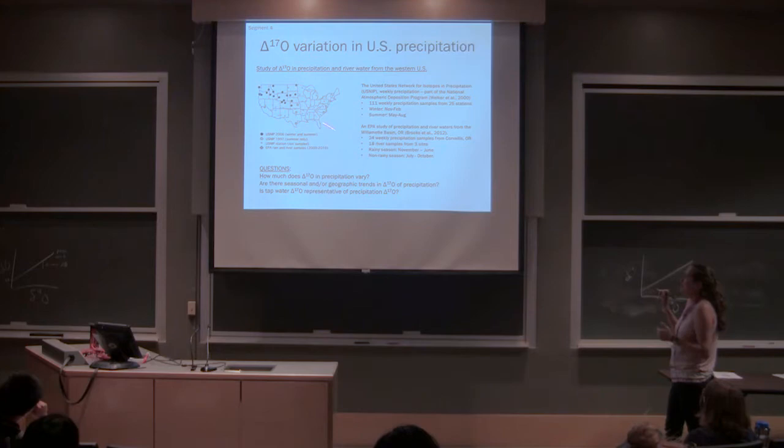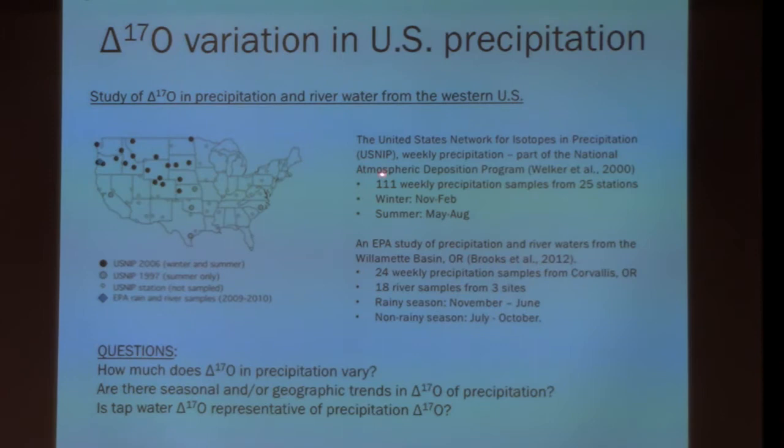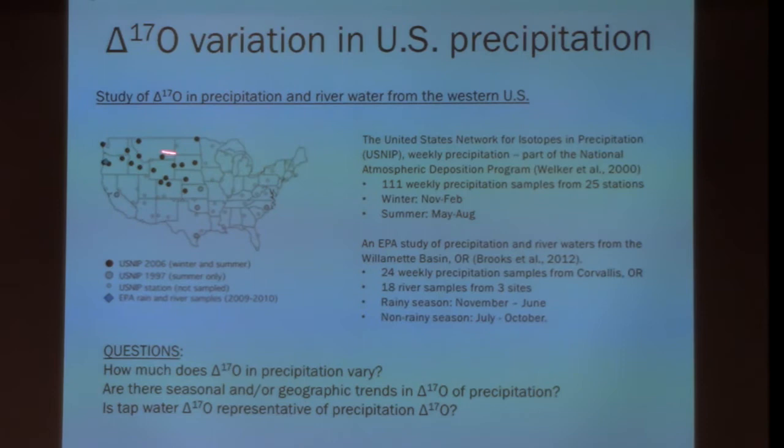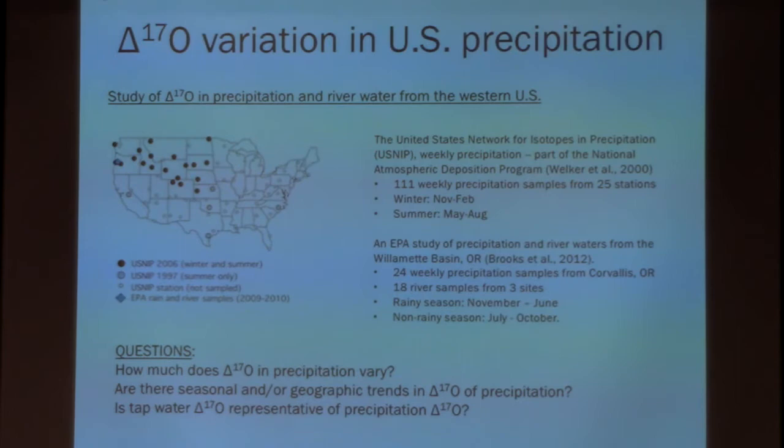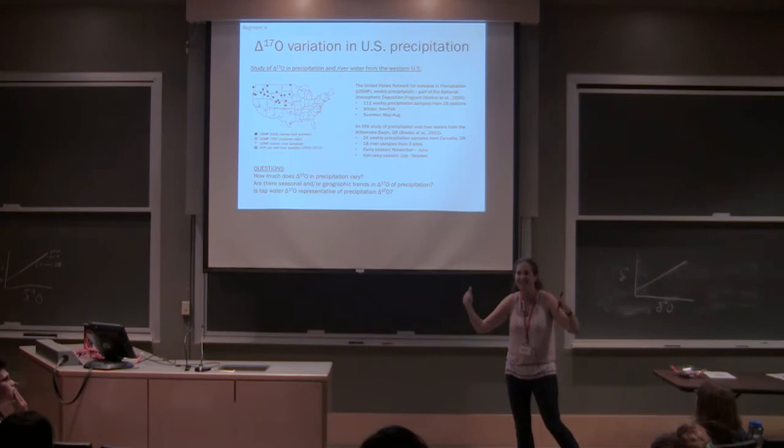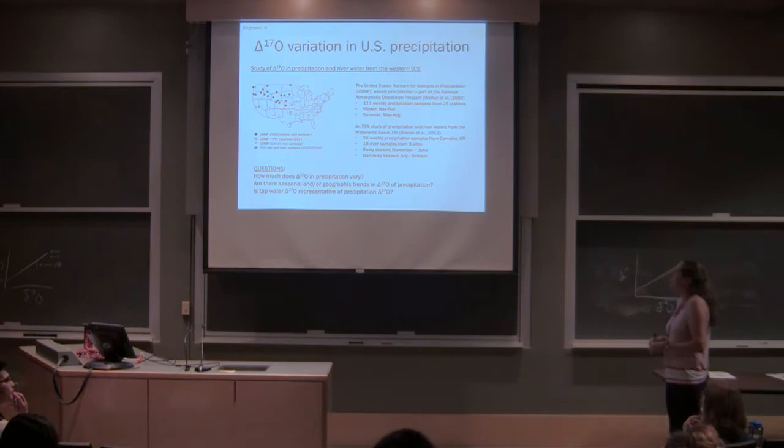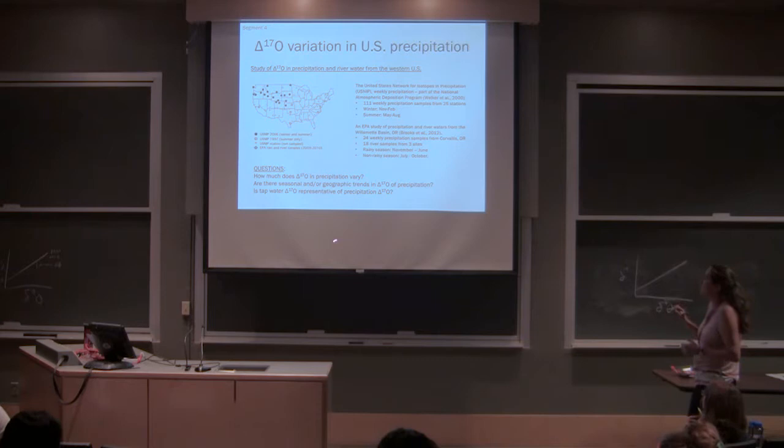All these circles are places where Jeff has a network of U.S. precipitation. So I asked Jeff, can we sample some of these that you've already analyzed for Delta D and Delta 18O for 17O? The benefit of some of these 17O studies is I can say I know that something's been measured. I can use that to guide my sampling. So we basically ended up analyzing over 100 weekly precipitation samples from 25 different stations. I really wanted to get a transect up here and a transect across here. Most samples are from 2006, some are from 1997. So we sort of did what we did.